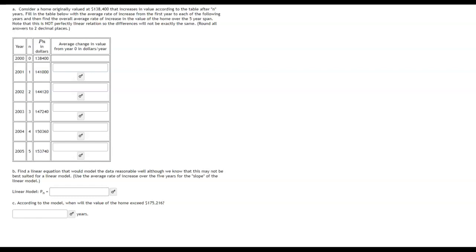Welcome to a video on linear modeling in a practical situation. We have a situation here where we have a home originally valued at $138,400. It increases in value according to the table after n years.